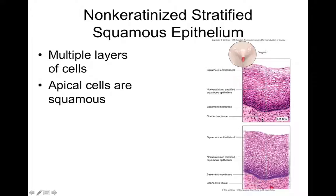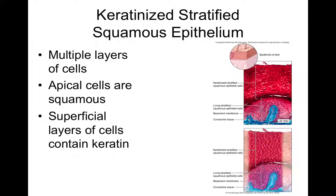Stratified squamous epithelium is very tough but not good at nutrient exchange because it is very thick — diffusion across all those cell layers would be slow. Stratified squamous epithelium is best at protection. Keratinized stratified squamous is found on skin, which needs to be very protective. Non-keratinized stratified squamous is found in the vagina, anal cavity, and oral cavity, where it protects against friction, abrasion, and potential infection.